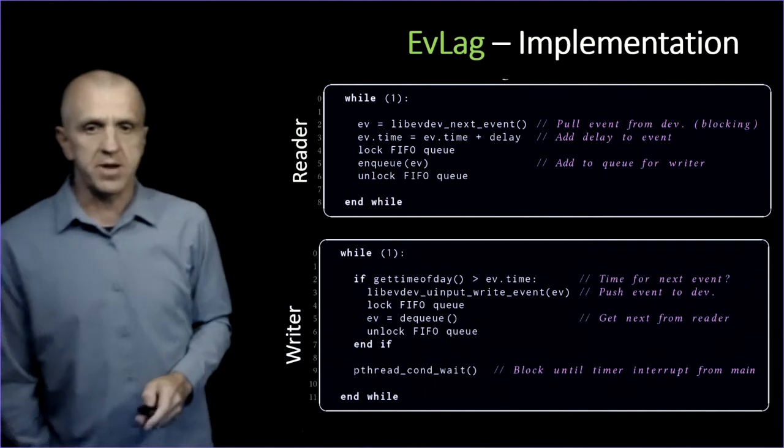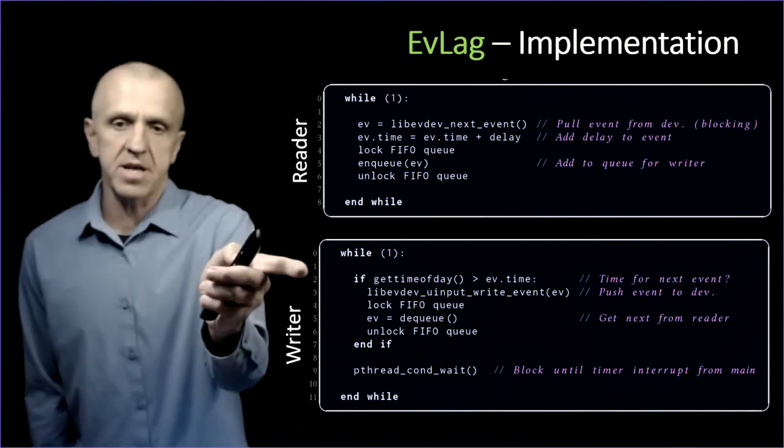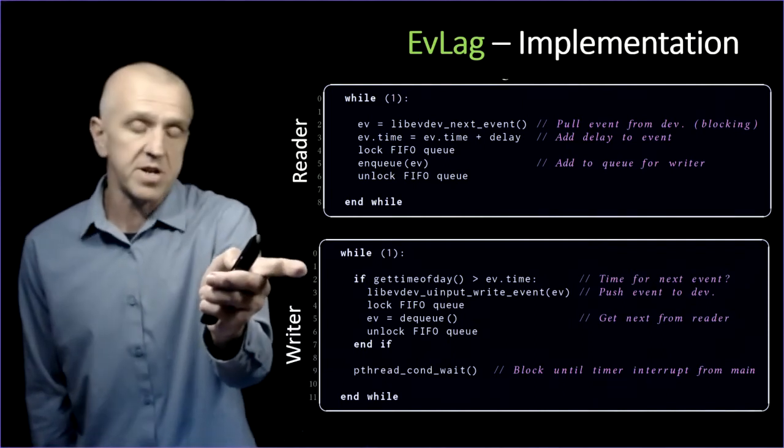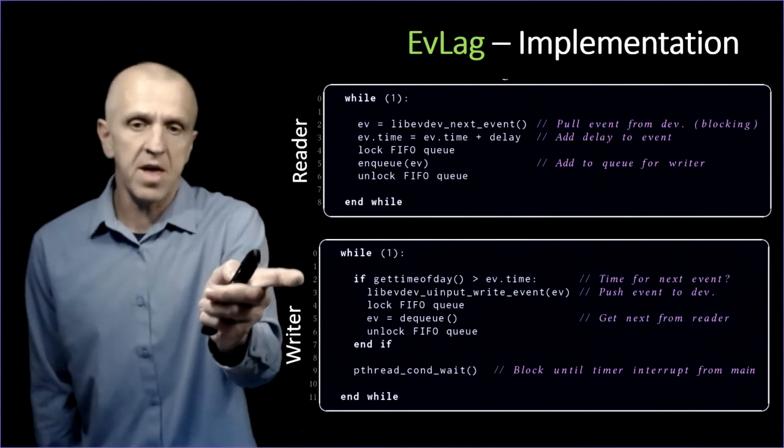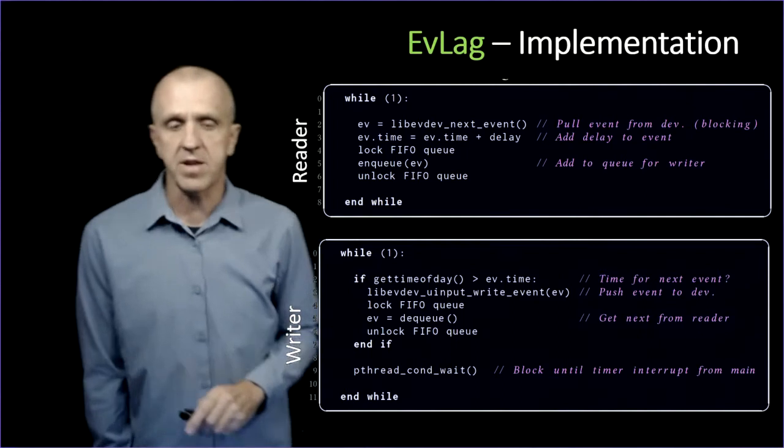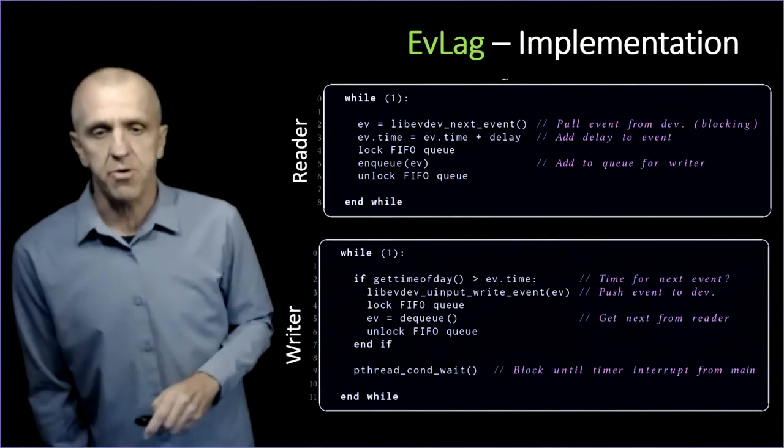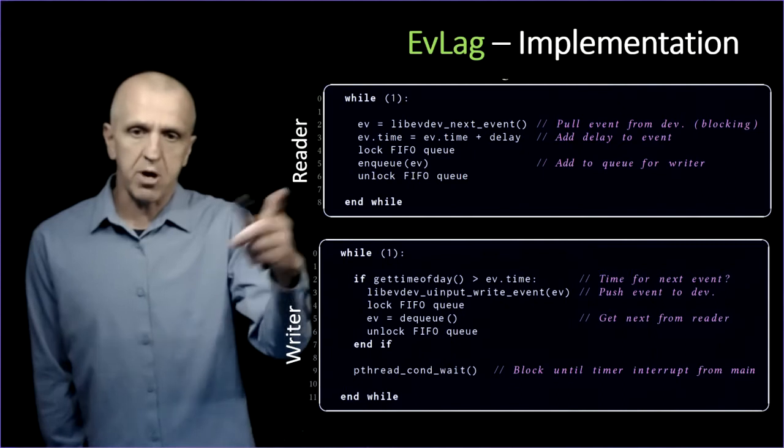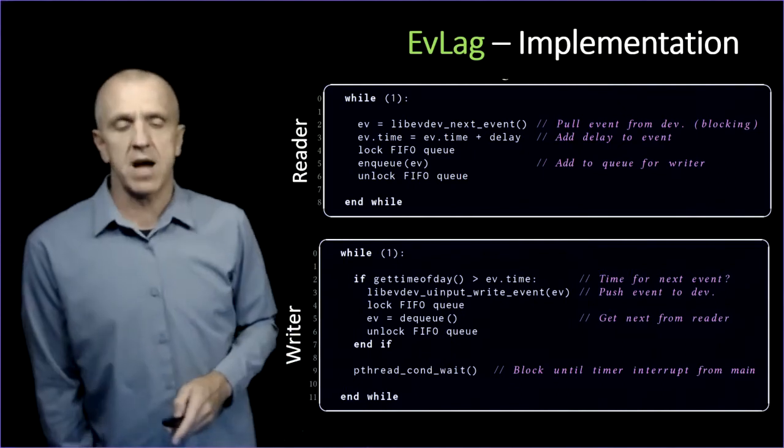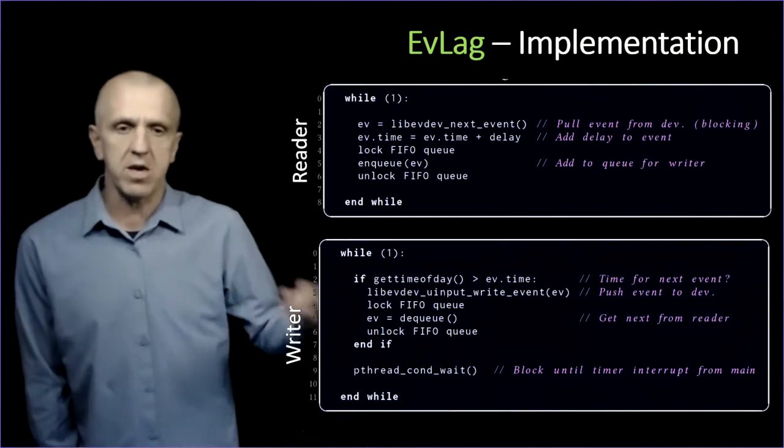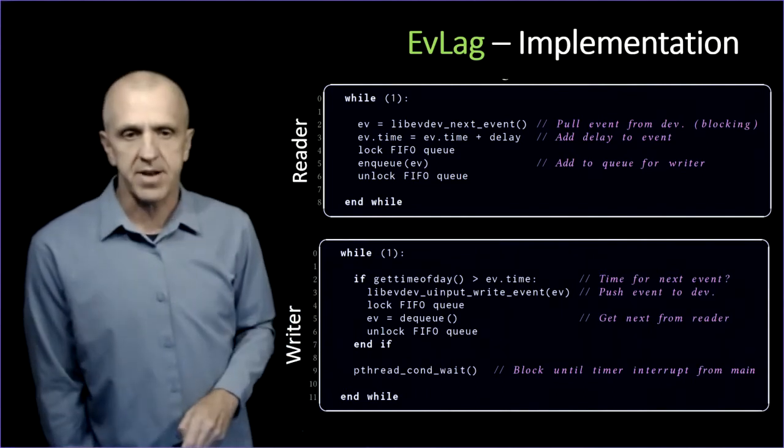The writer is the thing that pulls from the event. It checks has the latest event, is it time to dequeue that? Has the time expired, the lag time expired? If so, then it writes it to the device again so the application can grab it and do whatever it's supposed to do with it. It uses the same queue for that. It then blocks here, blocks because it gets interrupted by the main thread, that's the timer. It's going to pull from that queue at a rate controlled by the timer.